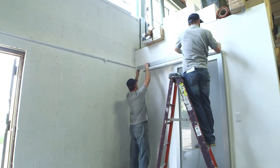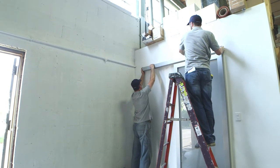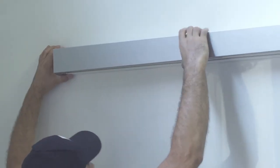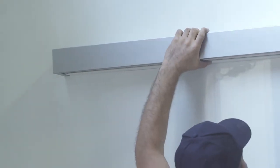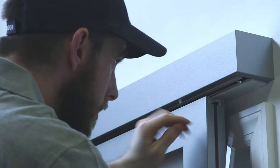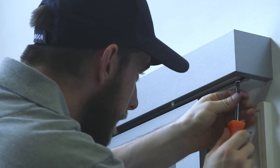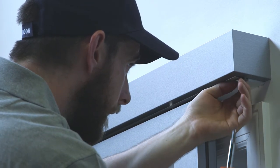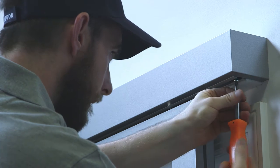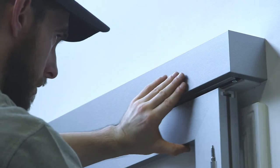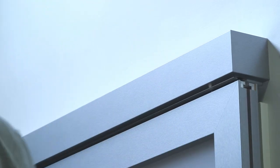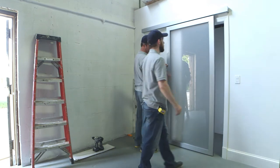Install fascia by slipping over track. Set track stops in their final location. Check door for proper operation.